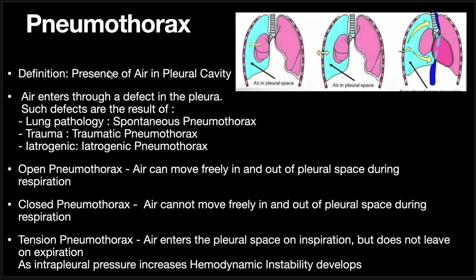Coming to the last topic, pneumothorax: pneumothorax is defined as the presence of air in the pleural cavity. Types include open pneumothorax, closed pneumothorax, and tension pneumothorax. In open pneumothorax, air can move freely in and out of the pleural space. In closed pneumothorax, air cannot move freely in and out. In tension pneumothorax, air can enter but cannot leave, so with each inspiration more and more air accumulates in the pleural space, pressing on the mediastinum and causing hemodynamic instability.